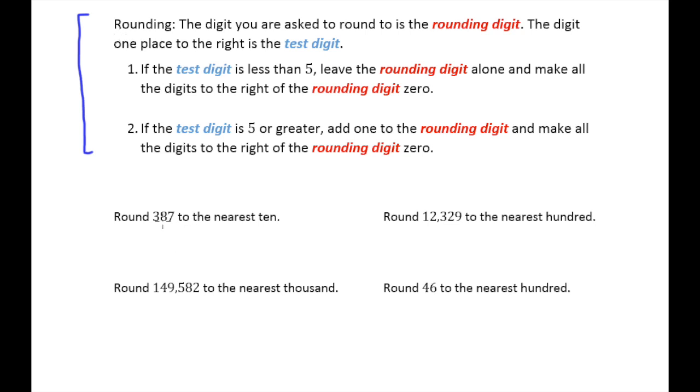So let's go down here and identify those two vocabulary terms. So eight is my rounding digit and it says one space to the right is where you'll find what we call the test digit.